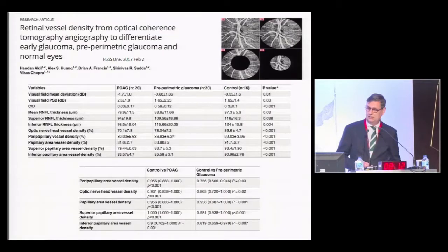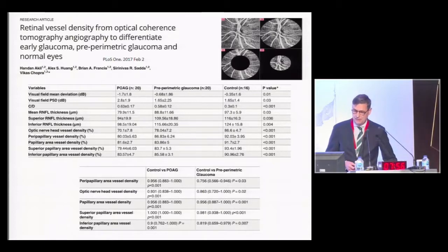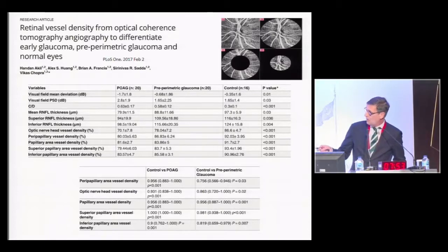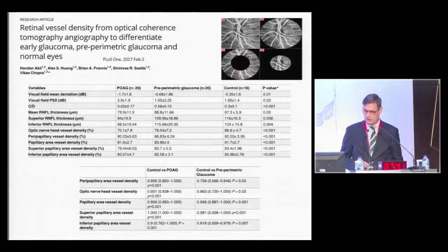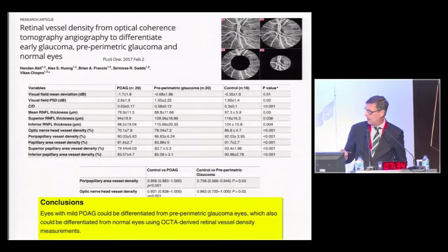Similarly, this was reported by Achille and colleagues, who investigated pre-perimetric very early glaucoma cases with OCT angiography and compared them to controls and open-angle glaucoma patients. They found that when comparing controls with pre-perimetric glaucoma patients, the peripapillary area vessel density was significantly different even at this very early stage, concluding that eyes with mild open-angle glaucoma can be differentiated from pre-perimetric glaucoma eyes before the onset of perimetric field defects by OCT angio.